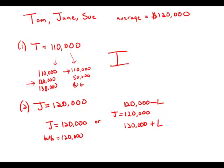In other words, however low one is, the other would have to balance it out and be just as high so that they average out to exactly $120,000.